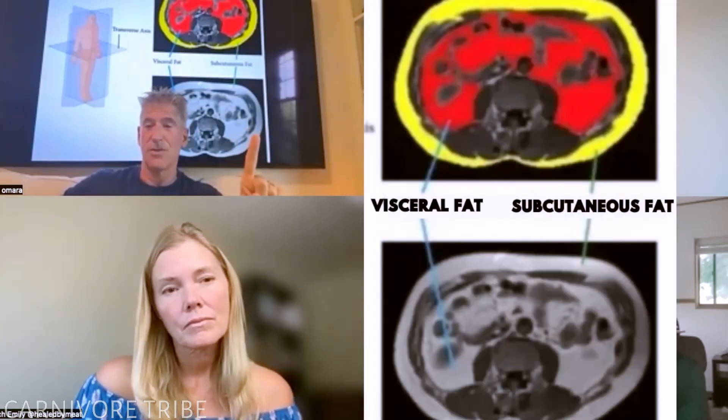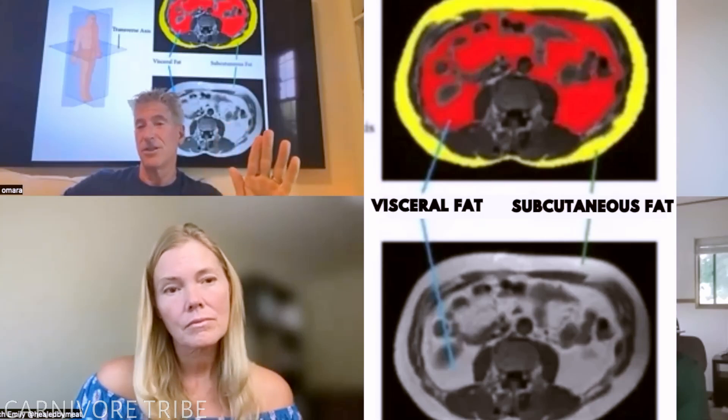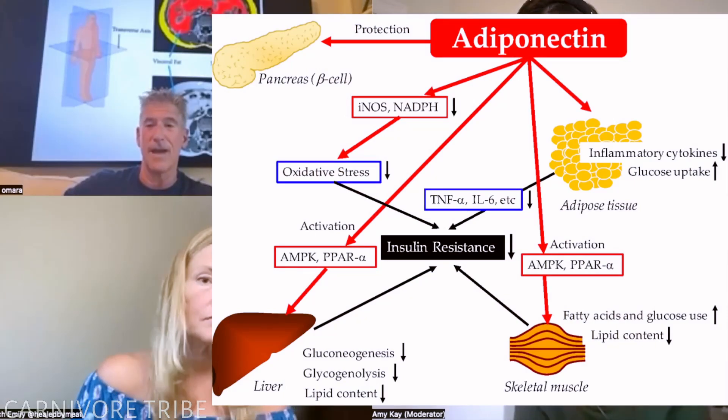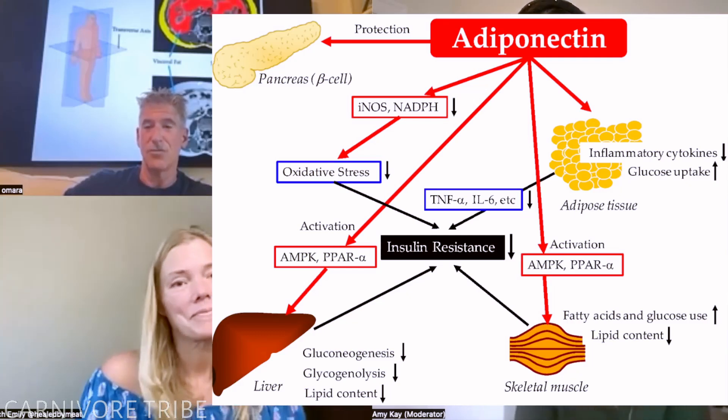Visceral fat is bad and produces harmful inflammatory substances. Superficial subcutaneous fat, on the other hand, is actually good. It produces a wonderful molecule called adiponectin. If you've never heard about adiponectin, learn about it — it's associated with reducing cardiovascular disease. Superficial subcutaneous fat is associated with lower levels of inflammatory molecules, particularly those coming from visceral fat. Visceral fat is just the opposite: it increases those inflammatory molecules.